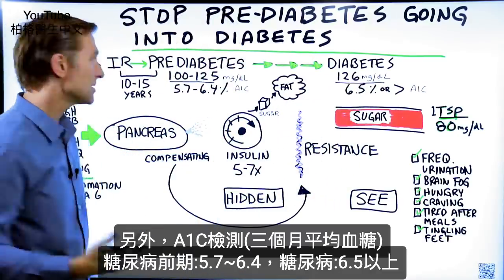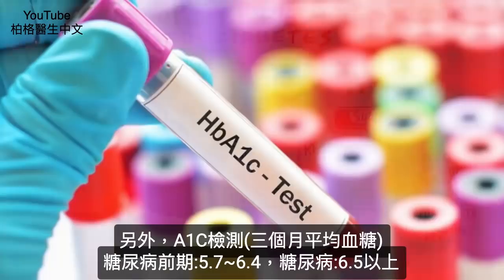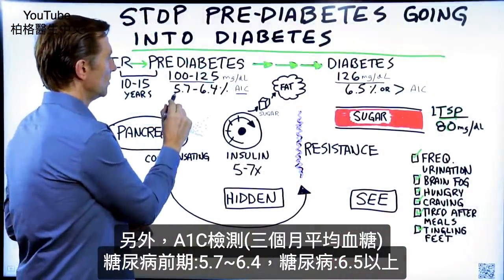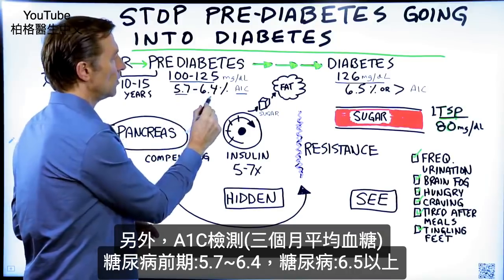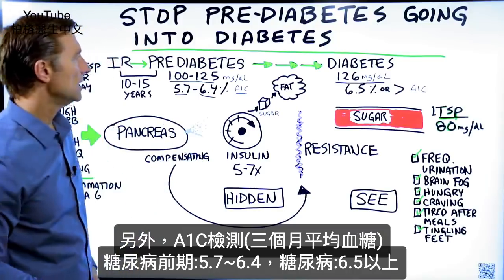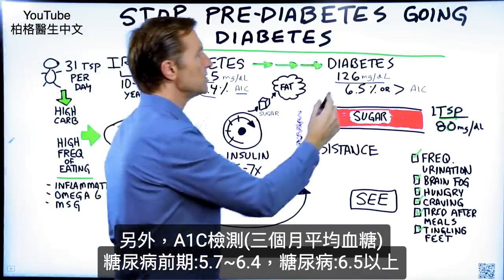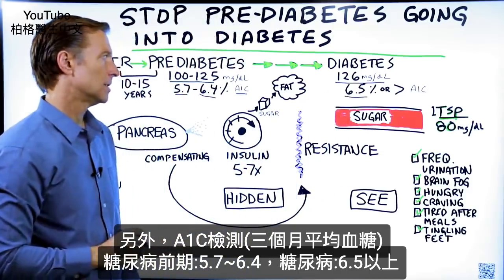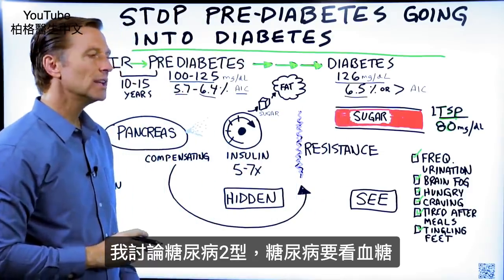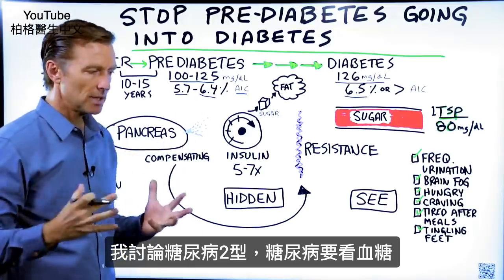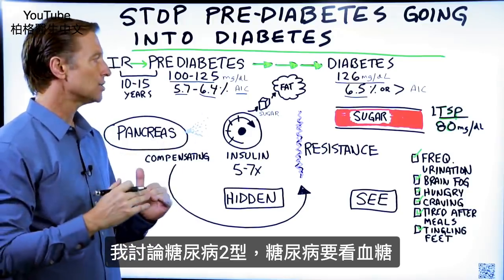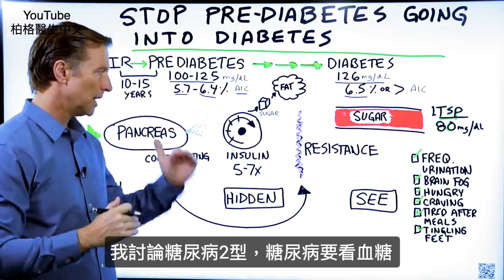We're talking about another test called A1C, which is an average of three months of your blood sugars. We're dealing with a 5.7 to a 6.4 with pre-diabetes, and then once you're diabetic, it becomes 6.5 or greater. So really, when we're talking about diabetes type 2, we're just talking about the elevation of sugar in your blood.